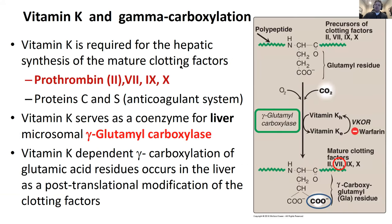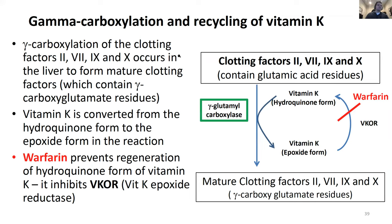Vitamin K has to do with clotting factors 2, 7, 9, and 10. It involves gamma-glutamyl carboxylase - gamma carboxylation. If you have a problem with vitamin K, you can get excess bleeding. Good point: vitamin K is made by your gut flora.